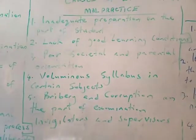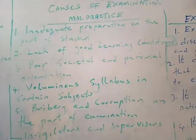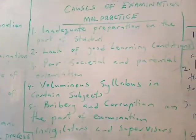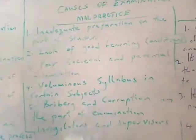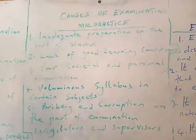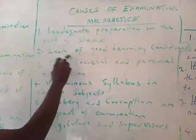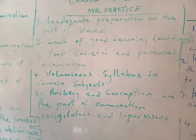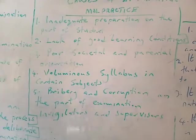The second cause of examination malpractice is lack of a good learning environment. Environment is a great factor in teaching and learning. If the environment is not conducive for teaching, the student may not assimilate well or understand the topic better. And when examination comes, this lack of good learning conditions will make the student want to involve in examination malpractice.